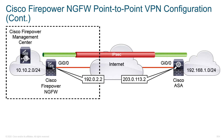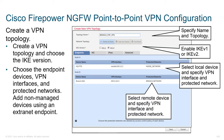Here we see our topology. To the left we've got the Cisco Firepower Management Center, our management platform, which manages the Firepower next-generation firewall. In the interface, we're creating a new VPN topology, starting by giving it a name — this is a requirement. Next we select the type of network topology: point-to-point, hub and spoke, or full mesh. For our purposes today, we'll select point-to-point.